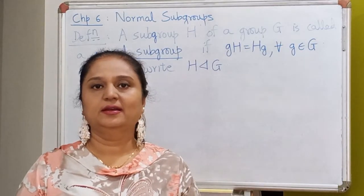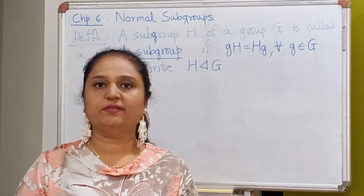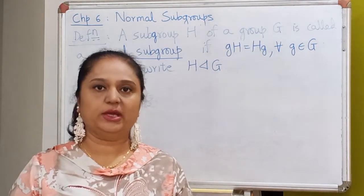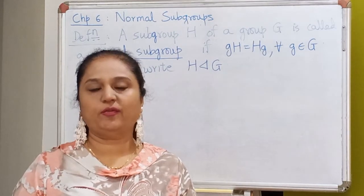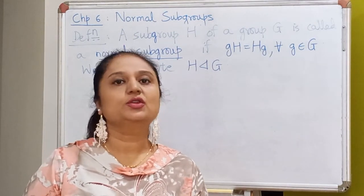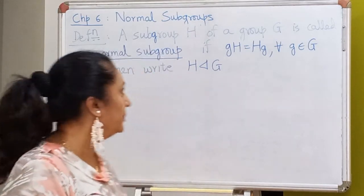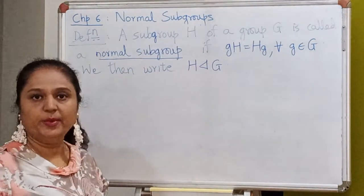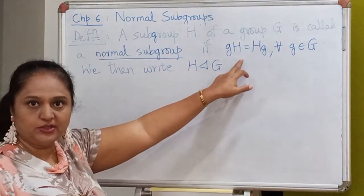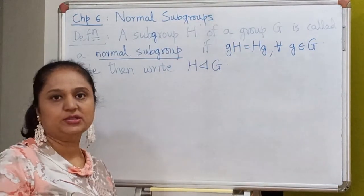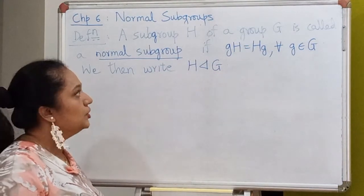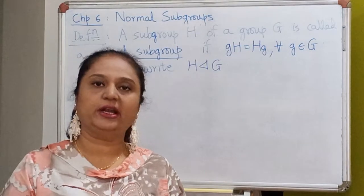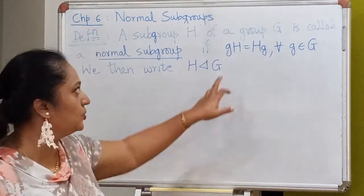Hello everyone. In the last lecture we defined a normal subgroup, and in today's lecture we will see a few examples and equivalent definitions for a normal subgroup. A subgroup H of a group G is called a normal subgroup if and only if every left coset of H is equal to the corresponding right coset of H in G.